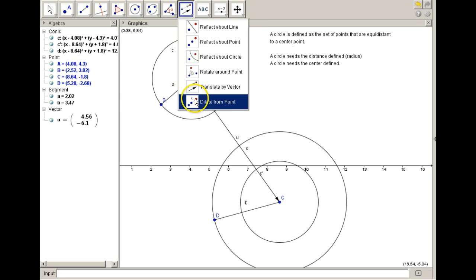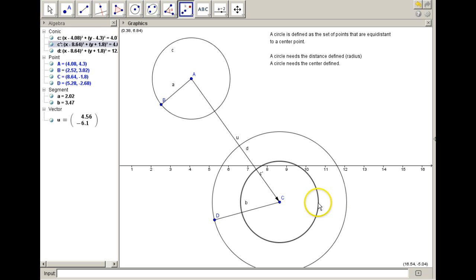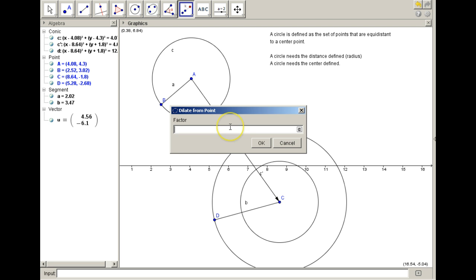Oops, that's a translation, a dilation of this new circle from this center. And the factor is going to be the new measurement, which was 3.47, over the old measurement, 2.02. And the beauty of that is,